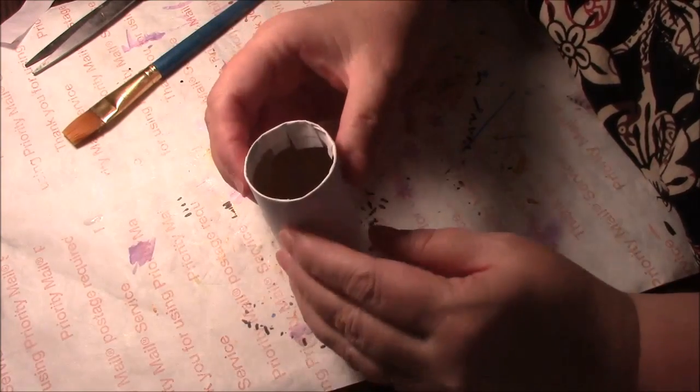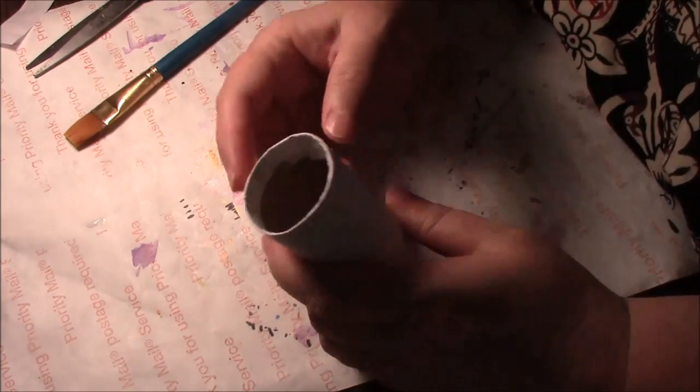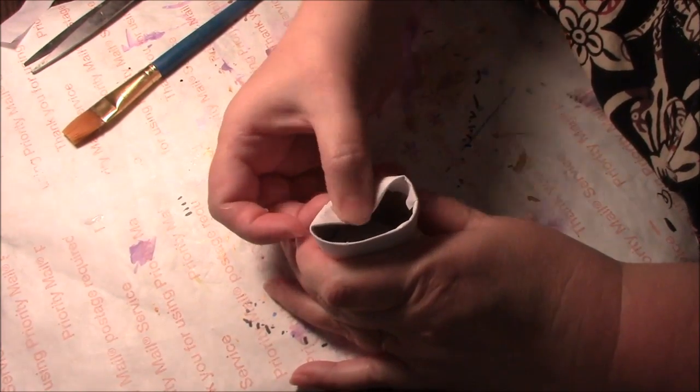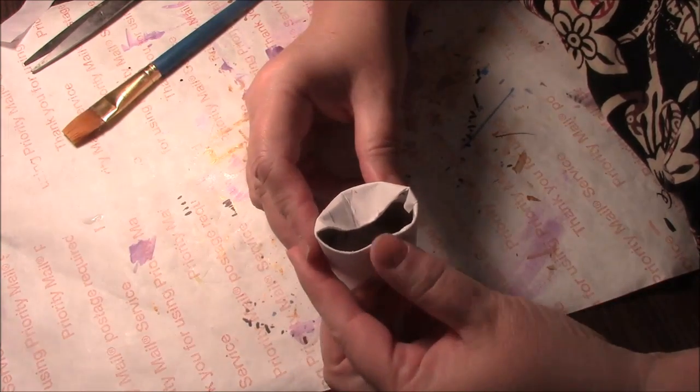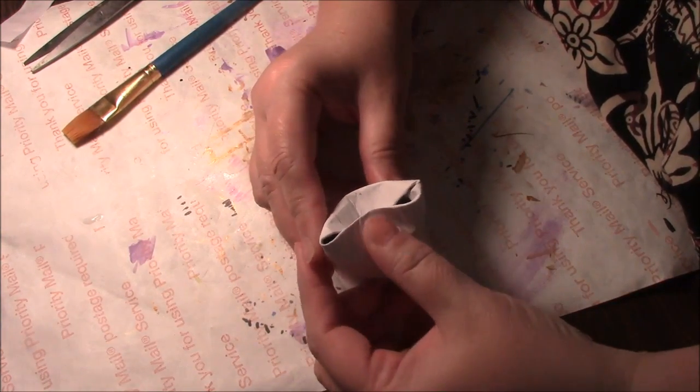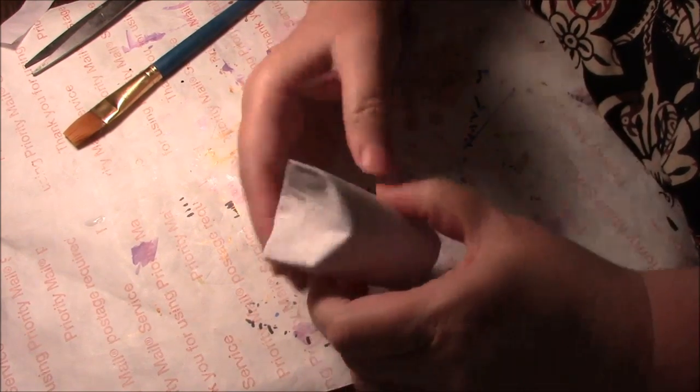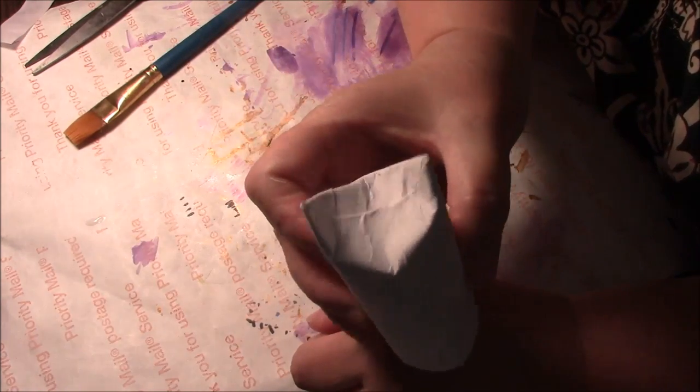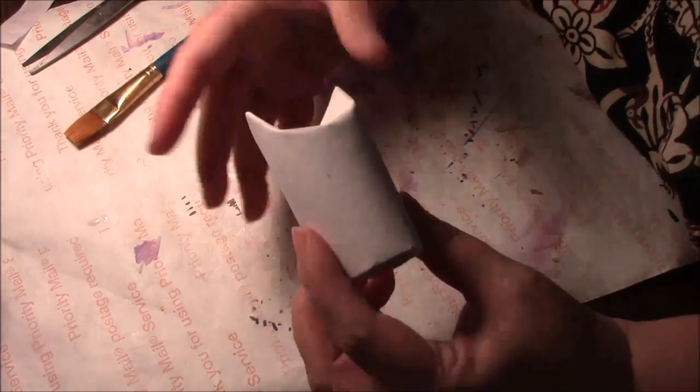Now to create the ears, we're just going to push in, let's see, I'm keeping the seam in the back. We're just going to push in one side of the toilet paper tube like about halfway over and then the other side. Just pinch those. We have little ears, see, and that should just stay put, you don't have to glue it or anything.